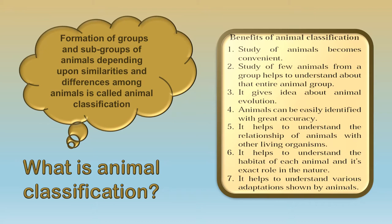If we study a few animals from one group, it helps us to understand about all the animals in that group. It also gives us an idea of how animals evolved. Animals can be easily identified with great accuracy. It also helps us to understand the relationship of animals with other living organisms, their habitat, their role in nature, and how each animal has adapted to nature.